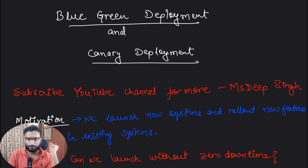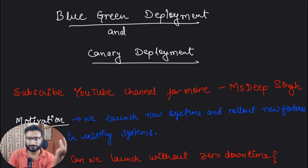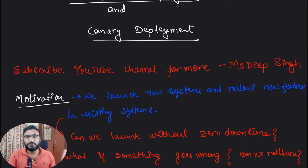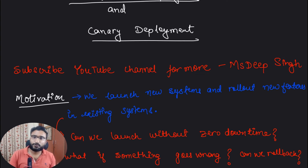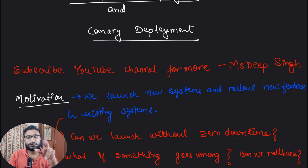In the context of deployments — whenever we are launching a new system, launching a new feature in an existing system, or doing a bug fix — what are the ways you can deploy so that there is no impact on live traffic? We are serving customers and we don't want to impact them. Customers should not even be aware that a deployment is ongoing in the backend.